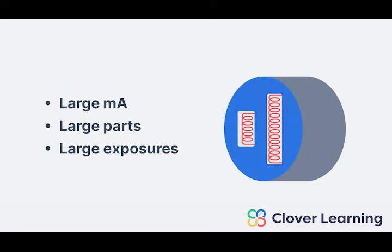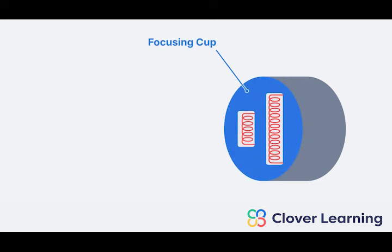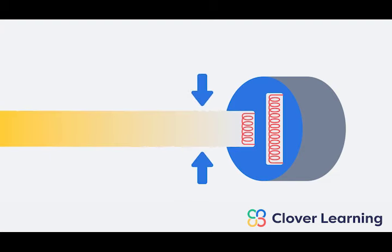These cathode filaments sit inside of what we call the focusing cup. The purpose of the focusing cup is literally to focus the electron beam. The electrons are negatively charged and so without the focusing cup they would try to spread apart and repel each other in space. The focusing cup is negatively charged and so it repels the electrons and presses them back together in a tight electron stream.